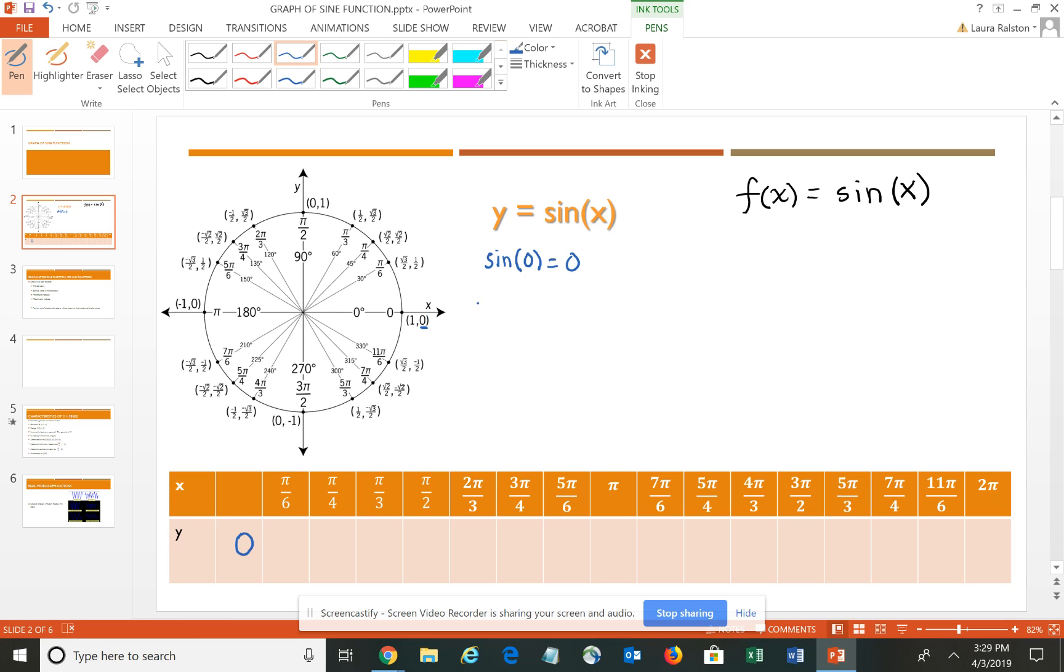If I want to look at the sine of pi-sixth, I'm going to read around to pi-sixth. I'm looking for the Y coordinate, which happens to be one-half. Then you continue that rotation – pi-fourths would be square root 2 over 2. The sine of pi-thirds would be square root 3 over 2.